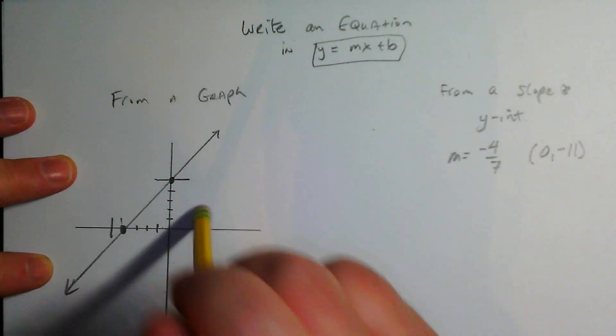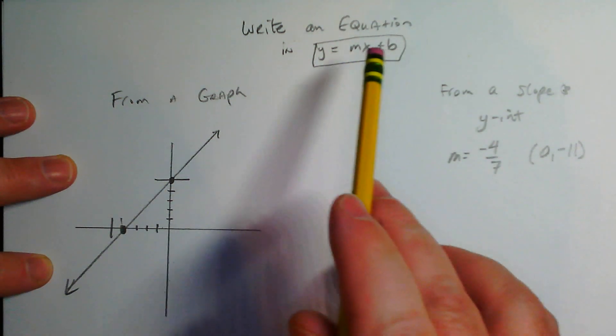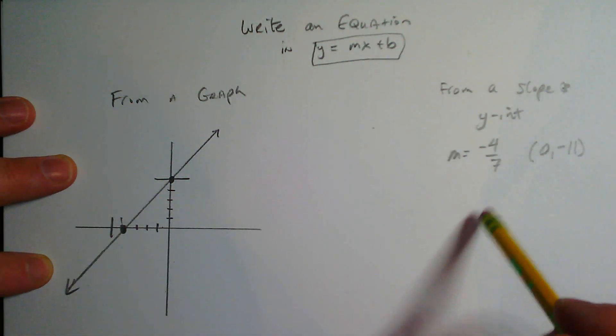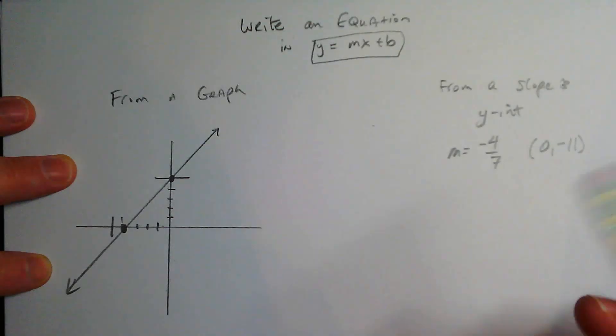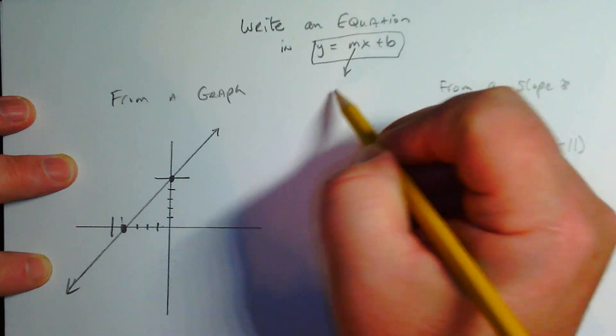Two things: first, what if they give us a graph and ask, 'What's the equation of that line?' Second, they're going to give us a y-intercept and a slope, and we're going to write the equation. So let's get to it. First thing, you got to remember...